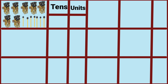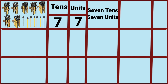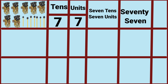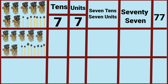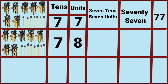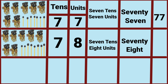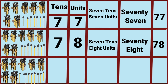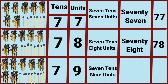Seven tenths and seven units makes seventy-seven. Seven tenths and eight units makes seventy-eight. Seven tenths and nine units makes seventy-nine.